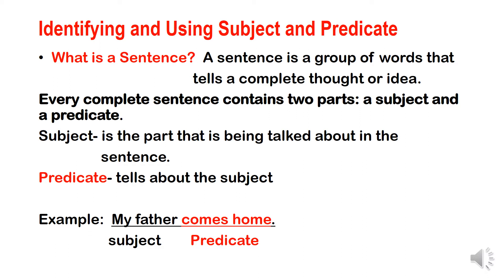Before we present our topic, remember that a sentence is a group of words that tells a complete thought or idea. In every complete sentence, it contains two parts: a subject and a predicate. A subject is the part that is being talked about in the sentence, whereas a predicate tells about the subject.